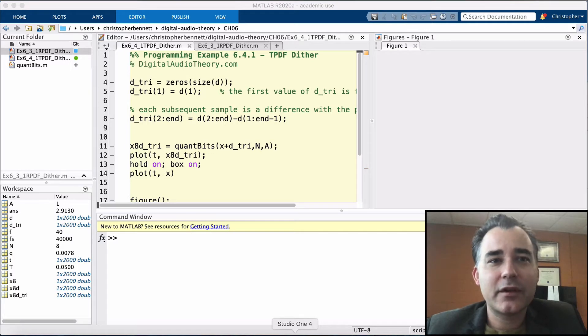Now in the last example, we looked at the impact of dither with a rectangular probability density function, or RPDF dither. Now while RPDF dither successfully decoupled large-level signals from the quantization noise, some correlation to the signal was still observed at very low-level signals. So while noise modulation was reduced with RPDF dither, some still remained.